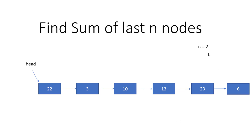Now there can be cases when N is greater than the number of nodes we have. So like here we have 6 nodes, but our N can be 7 or greater than 6. So in this case we would return 0 or minus 1, saying this is not a valid case.